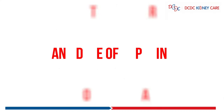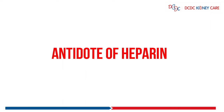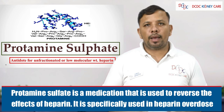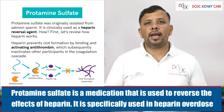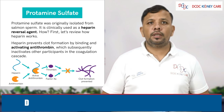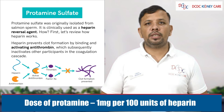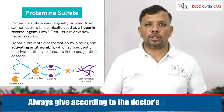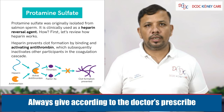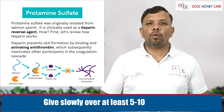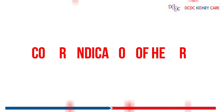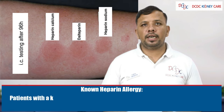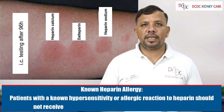Regarding the antidote of heparin: protamine sulfate is a medication used to reverse the effects of heparin, especially in heparin overdose. The dose of protamine sulfate is 1 mg per 100 units of heparin. Always contact your physician or nephrologist before administering protamine sulfate, and give it very slowly over 10 to 15 minutes.